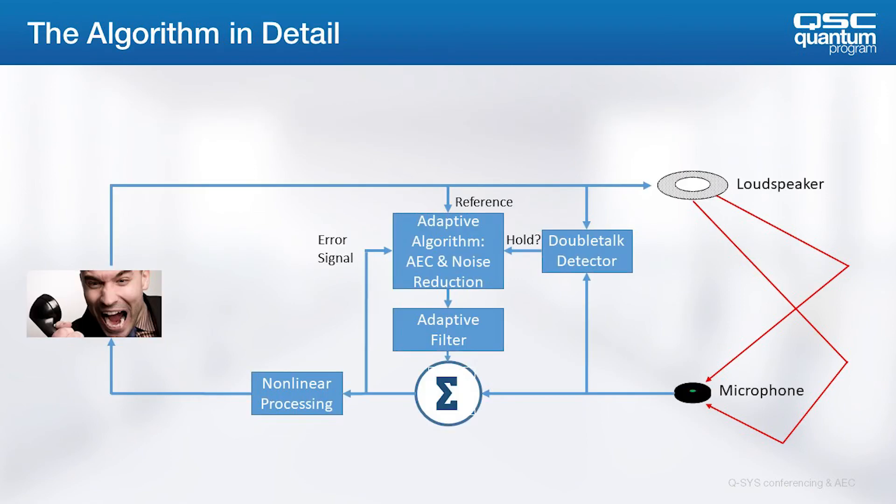If we look at the algorithm in detail, we see all the parts that make the right functionality for the conferencing application. The incoming conference signal goes to the AEC reference, is processed, and ultimately goes into the room. Notice that the adaptive filter set includes steady-state noise reduction, as well as the AEC functionality. The algorithm makes the necessary calculations and sets up the adaptive filter.